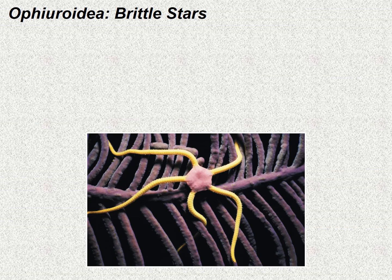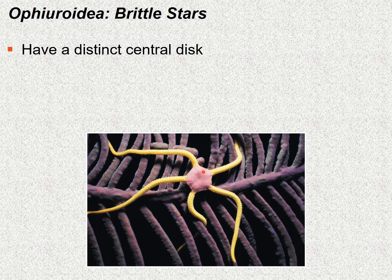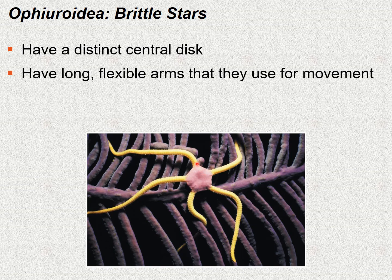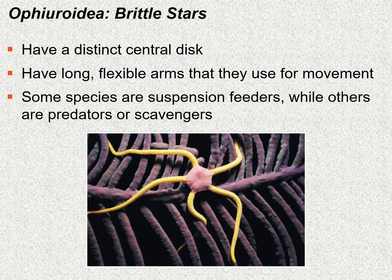Ophiuroidea include the brittle stars, which look very similar to sea stars. The differences include a distinct central disk and very thin, long, more flexible arms that they use for movement. Some species are suspension feeders, while others are predators or scavengers.